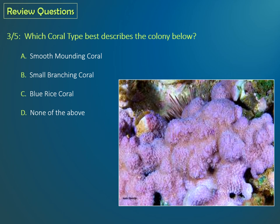Question three: Which coral type best describes this colony below? Is it A, smooth mounding coral? B, small branching? C, blue rice? Or D, none of the above? If you said C, blue rice coral, you're correct.